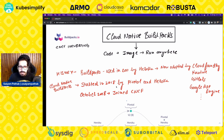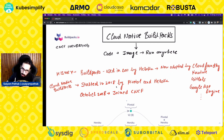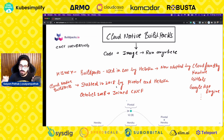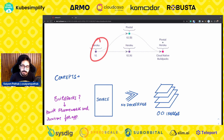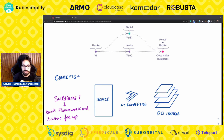Before diving into Buildpacks, let's see its history. Buildpacks were used in 2011 by Heroku and are now adopted by Cloud Foundry, Knative, GitLab, Google App Engine, and so on. Cloud Native Buildpacks was started in 2018 by Pivotal and Heroku, and in October 2018 they joined the CNCF Landscape as a collaborative project with all the features and production readiness from their previous experiences.